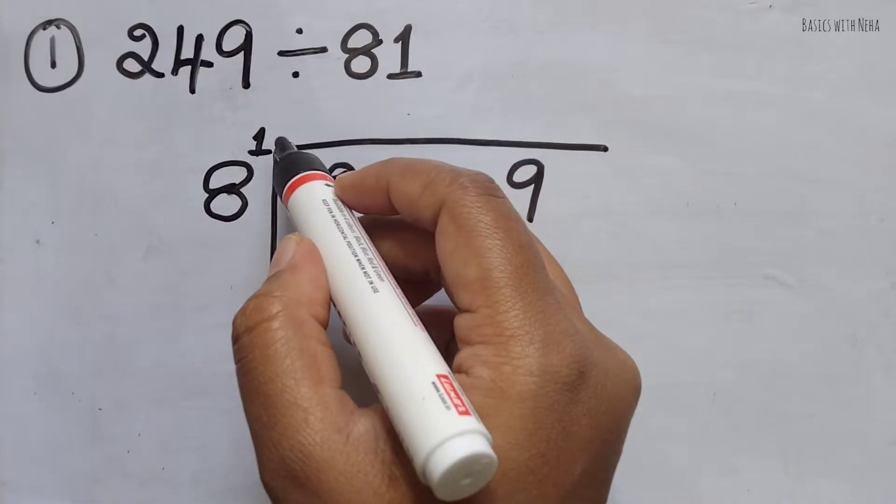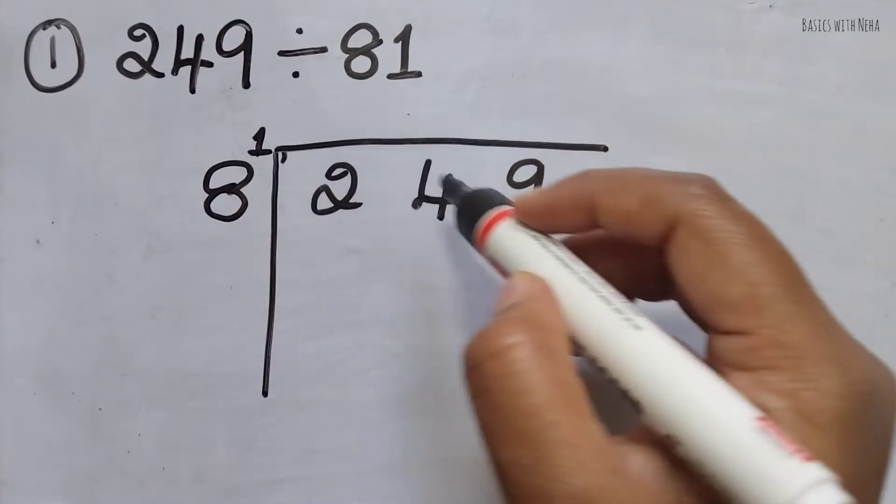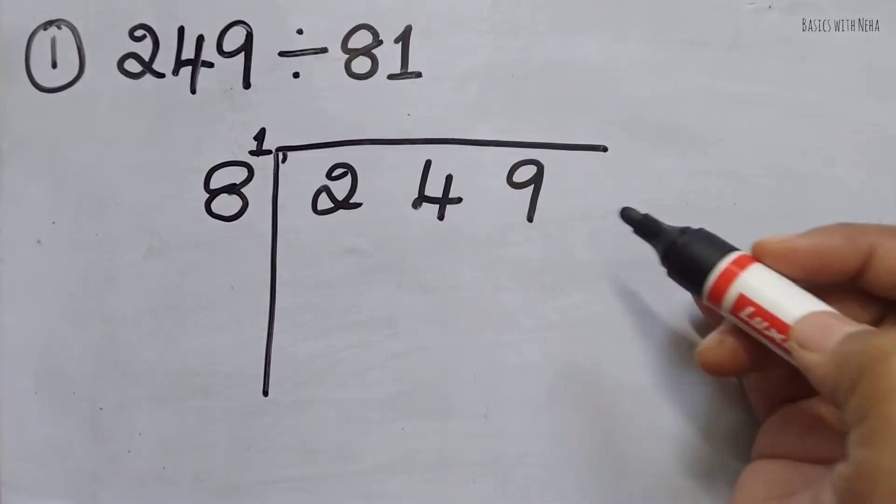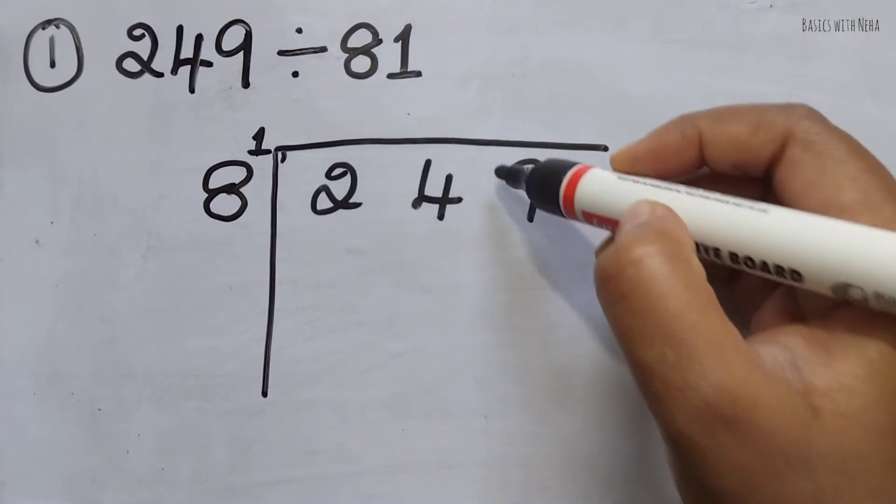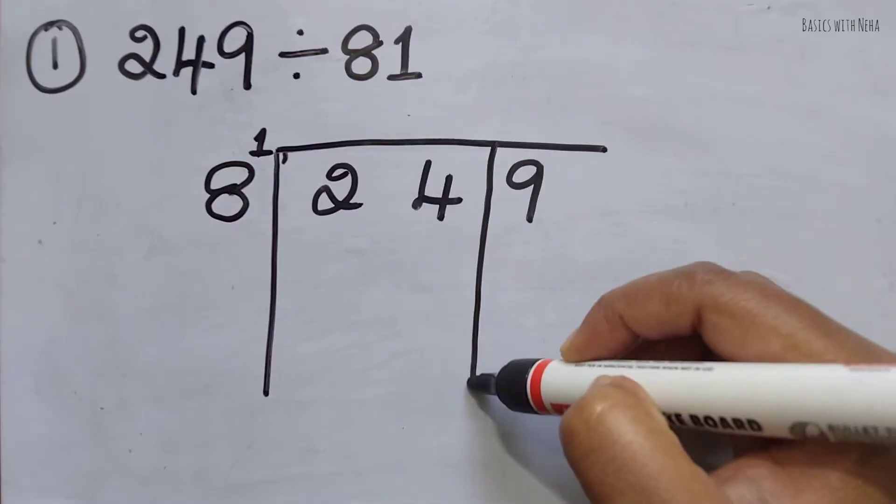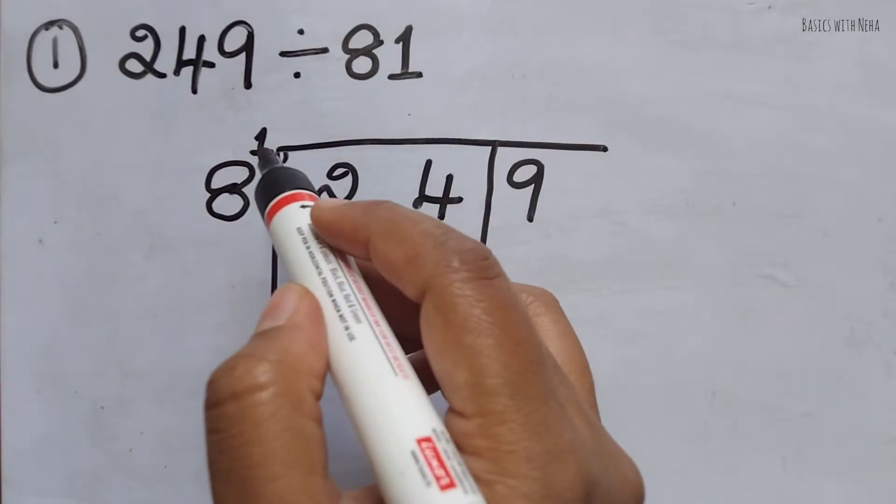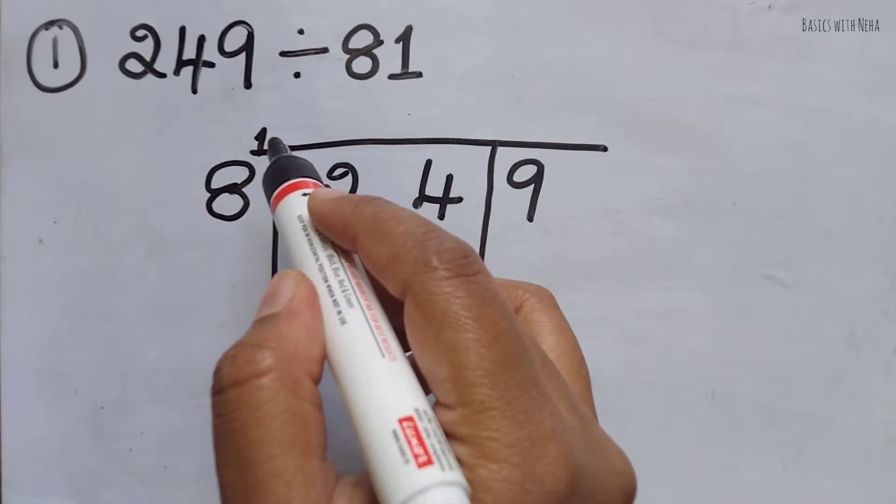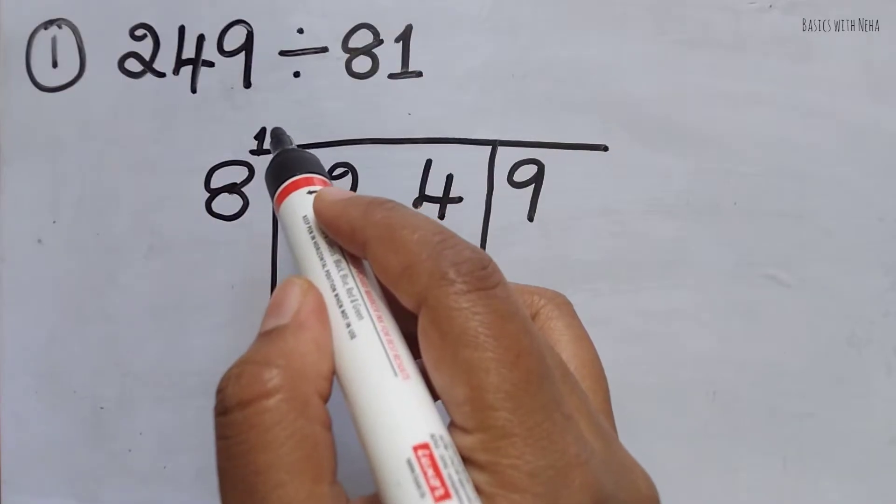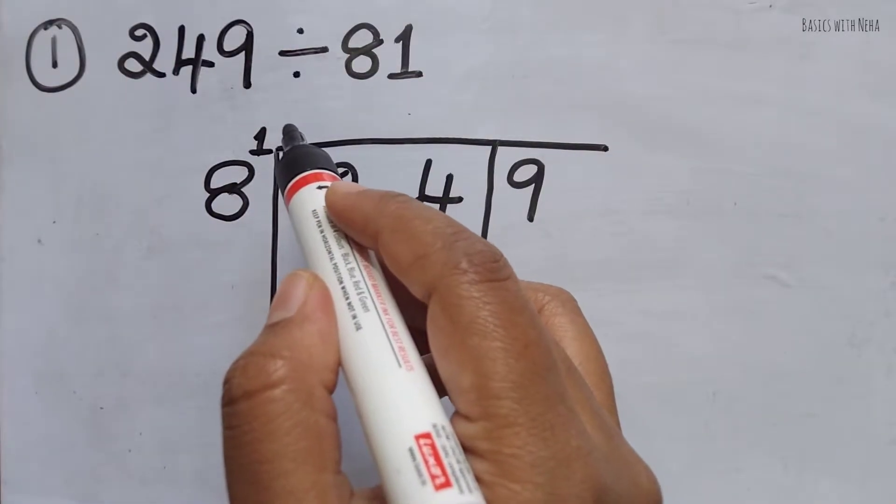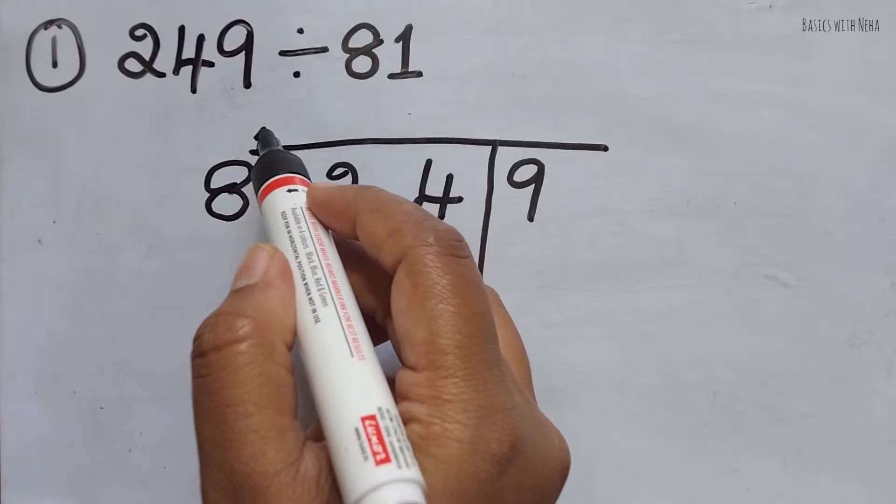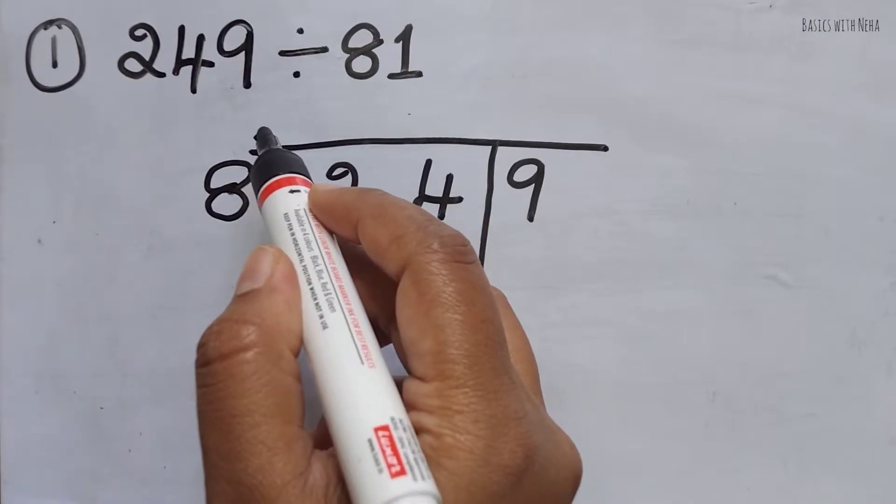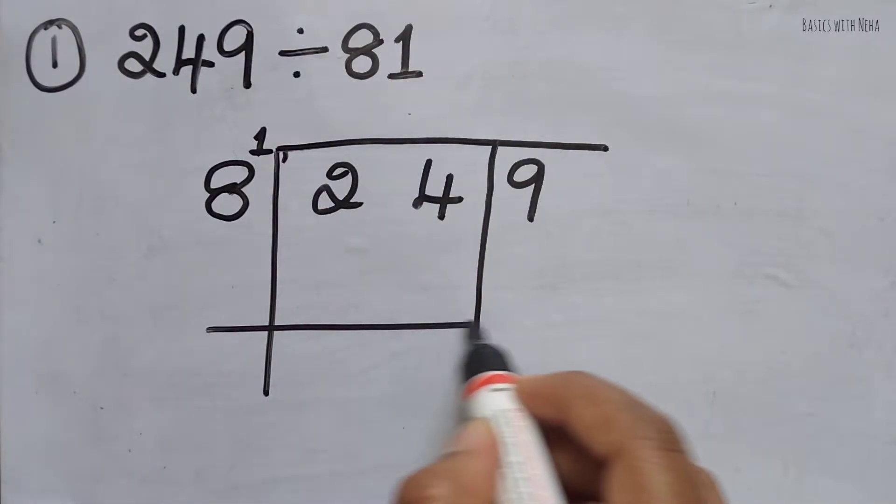Now, the number of Dvajanka digits decides the number of splits we should do, leaving the right-hand side number. There is one number and I always split like this. It's always better to keep one digit as the Dvajanka. If we keep two digits as the Dvajanka, the procedure will completely change. So it's always better to keep one digit as the Dvajanka, whether it's a three-digit or two-digit number. This is the way how we write first.